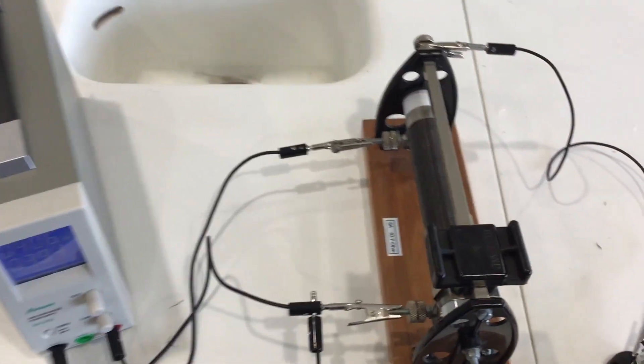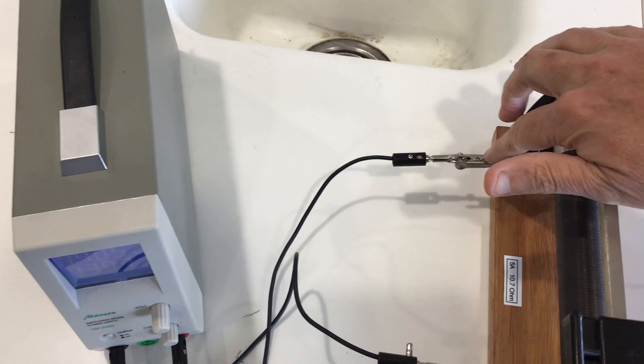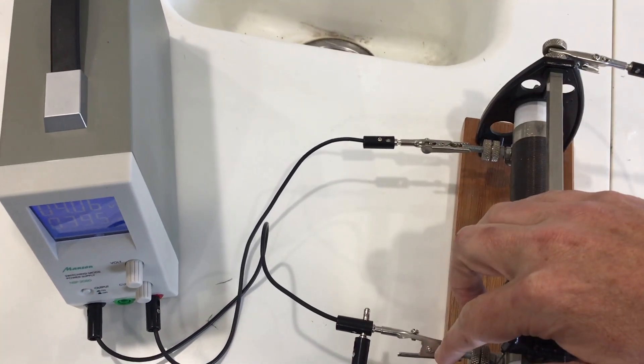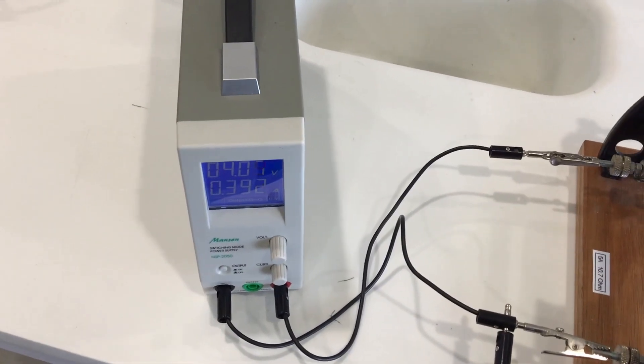Now a potential divider or rheostat has got really three connections. It's got the upper voltage here and lower voltage here. At the moment my power supply is set at four volts.